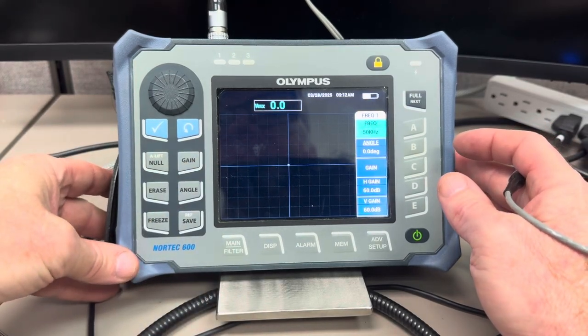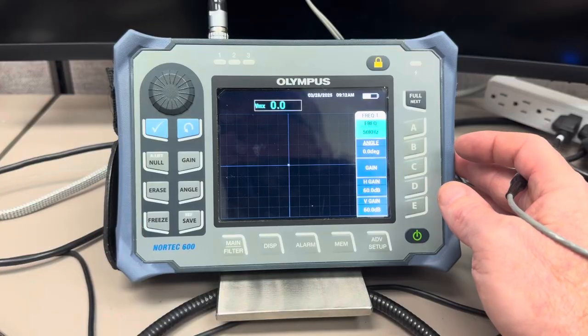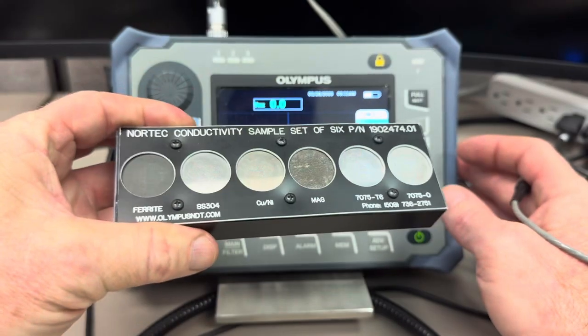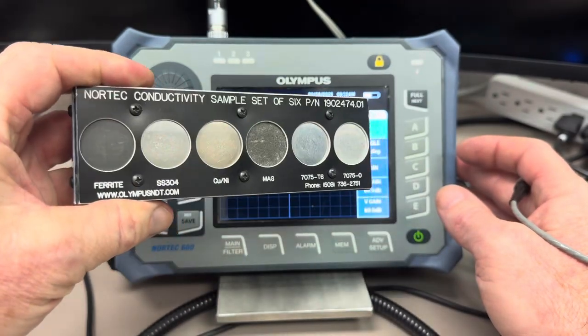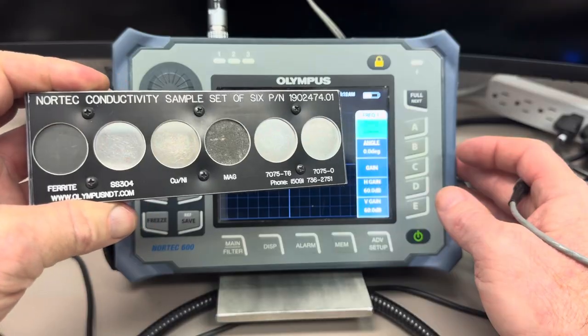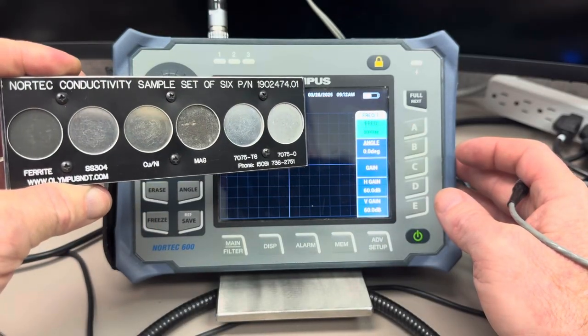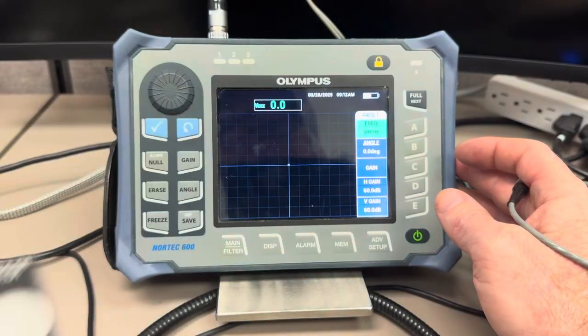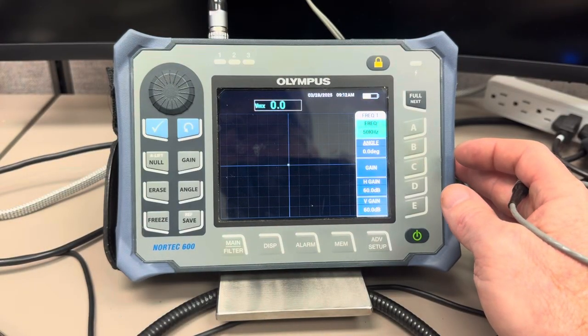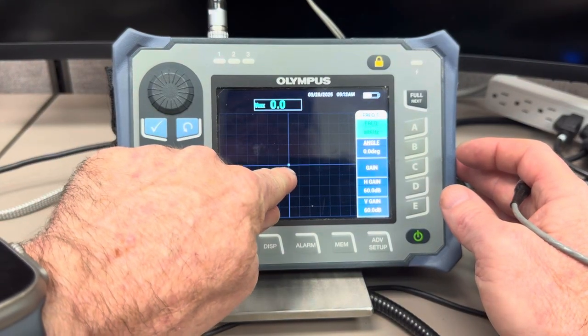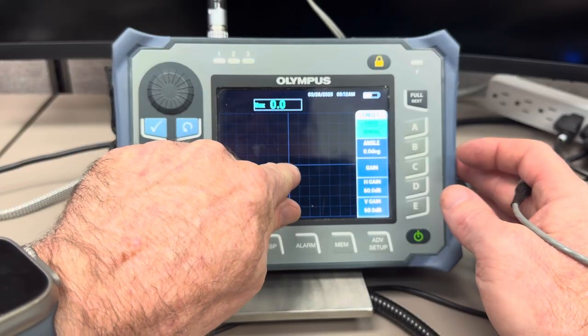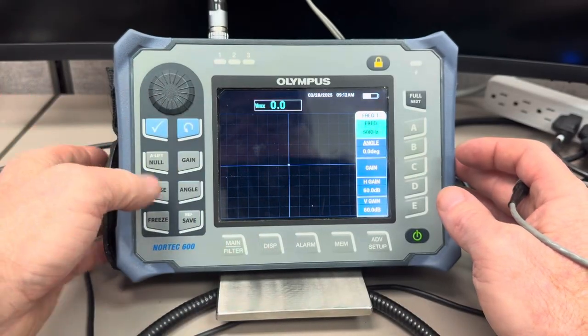Well when you're performing conductivity curves with sample blocks like this. This one is ferrite, 304 stainless, copper, nickel, magnesium, 7075 T6 aluminum, and 7075 0 aluminum. When using samples like that, normally what you do is you take your air operating point and you set it to the upper left hand portion of the screen.